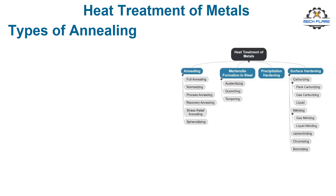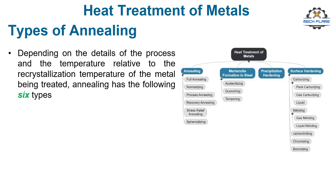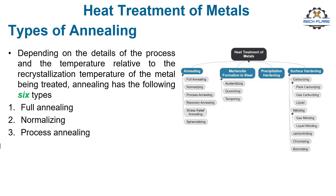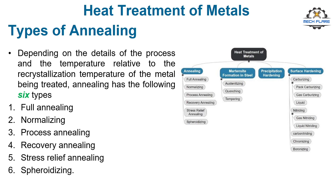Depending on the details of the process and the temperature used relative to the recrystallization temperature of the metal being treated, annealing has the following six types: full annealing, normalizing, process annealing, recovery annealing, stress relief annealing, and spheroidizing. Let's discuss these one by one.